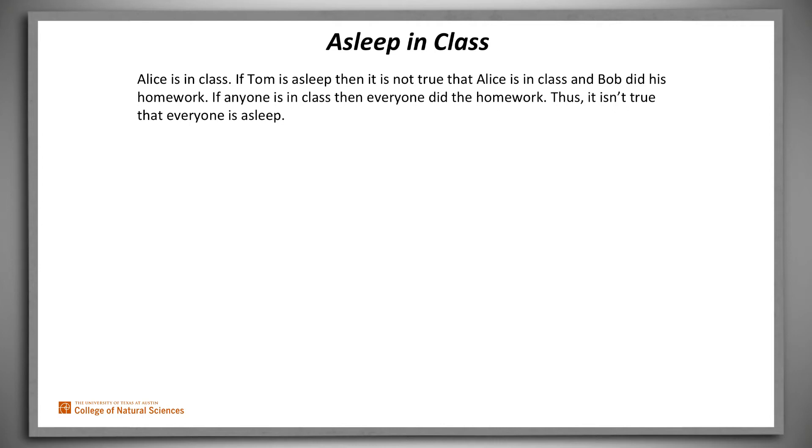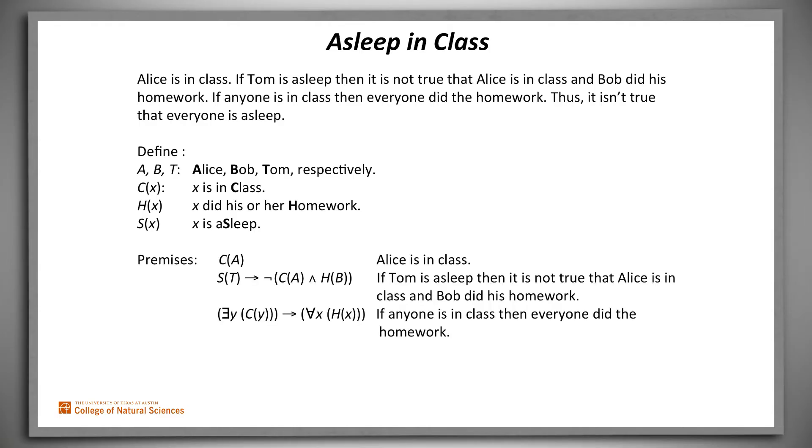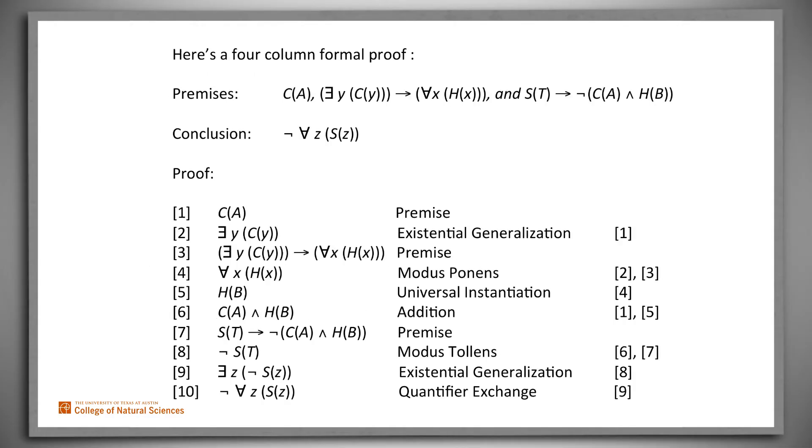To prove this in the very formal fashion we call a four-column proof, we begin by attaching symbols to some of the sentences. Then we encode the premises and also the conclusion we seek. The four-column proof then proceeds like we see here.